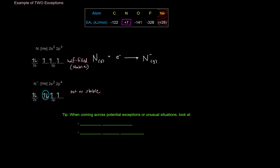Hopefully you've noticed, from this video and the previous video, that when coming across potential exceptions or unusual situations, you should always look at the electron configuration — and more specifically, the orbital diagram. The orbital diagram helps you think about half-filled orbitals, fully filled orbitals, stability, and all that sort of stuff.